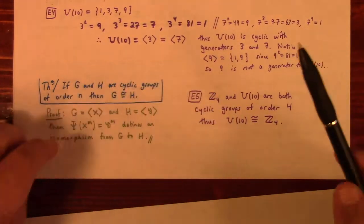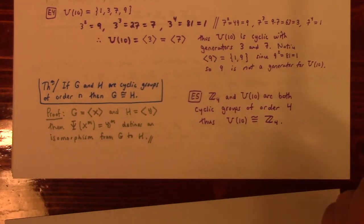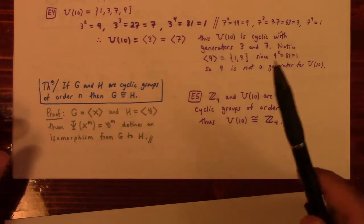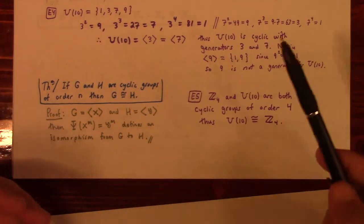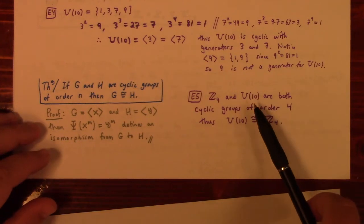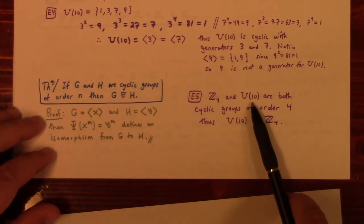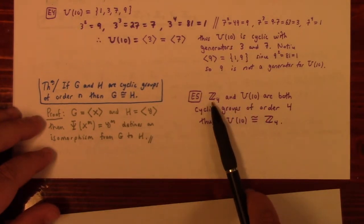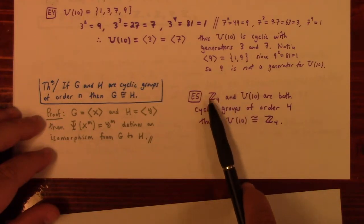Isomorphism is important because many properties of groups are preserved under it — for example, an invertible element maps to an invertible element, and the order of an element is preserved. We saw that U_10 had two elements of order 4, one element of order 2, and the identity. Since U_10 ≅ Z_4, it follows that Z_4 also has two elements of order 4, one element of order 2, and the identity.